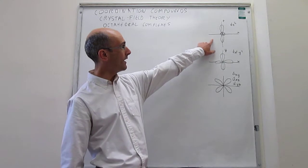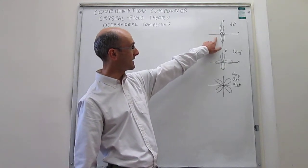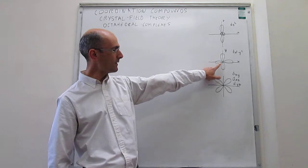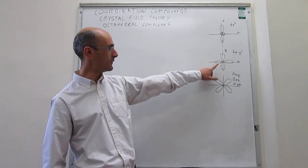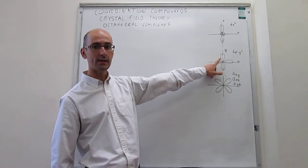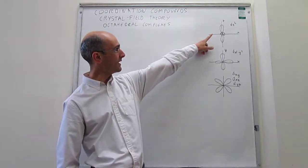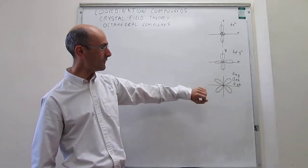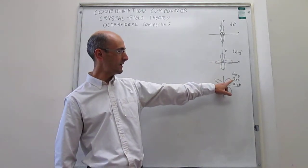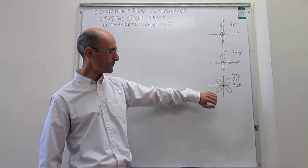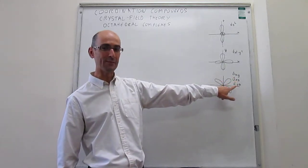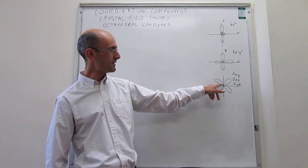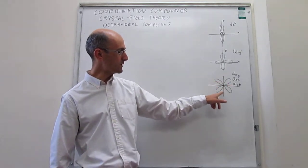The dz² orbital is aligned along the z-axis. Then we have the dx²-y² orbital, where the lobes are aligned with the x- and y-axes. And then you have a set of three other orbitals — the dxy, dxz, and dyz — which lie in the xy, xz, or yz planes, but they are not pointing along the axis directions; instead, they bisect the angles between those axes.